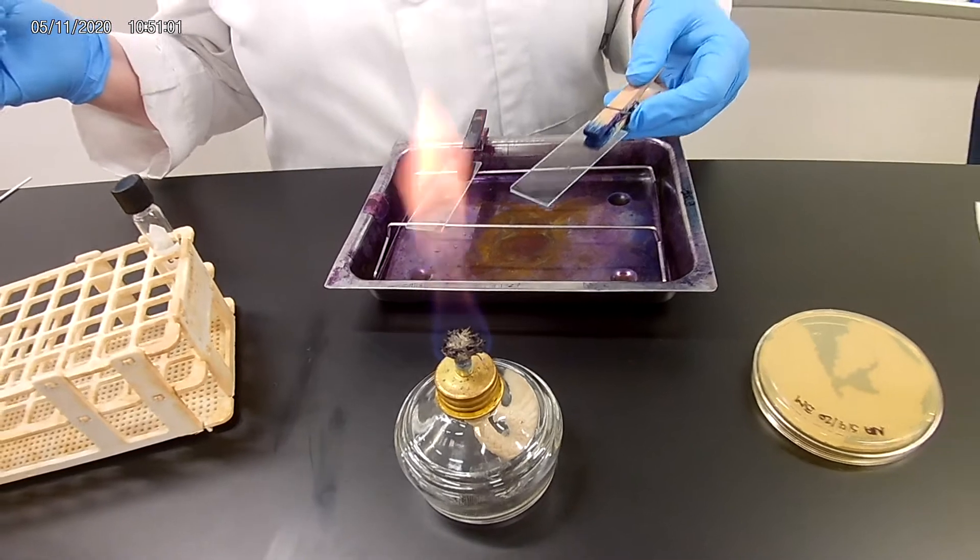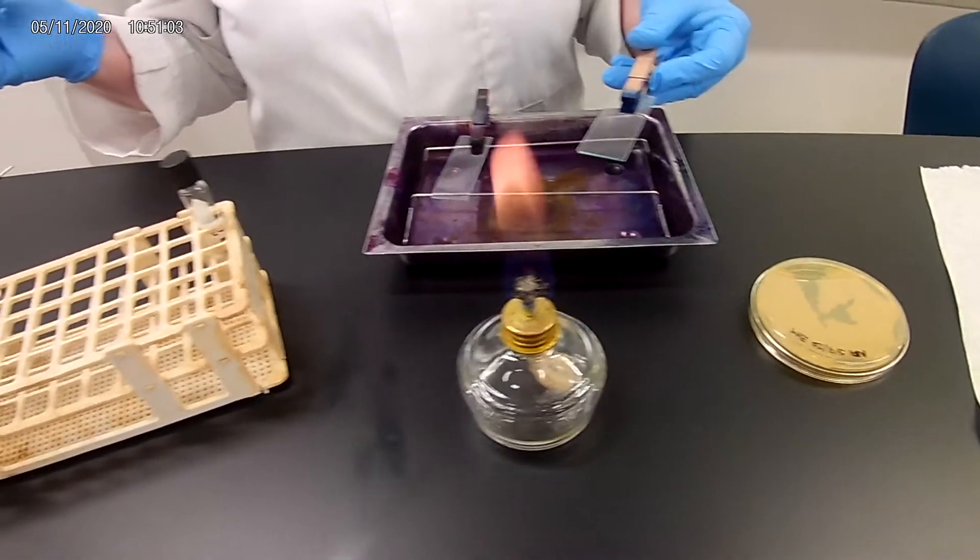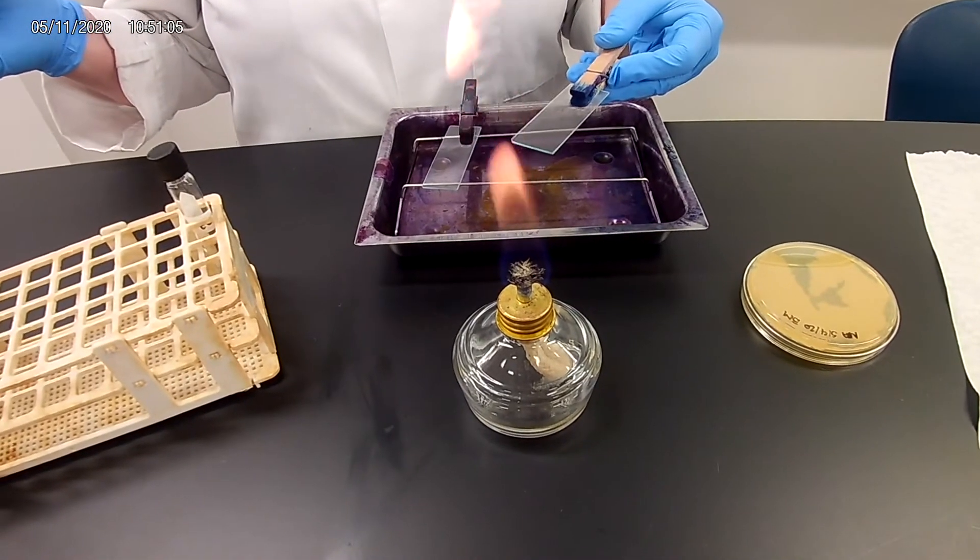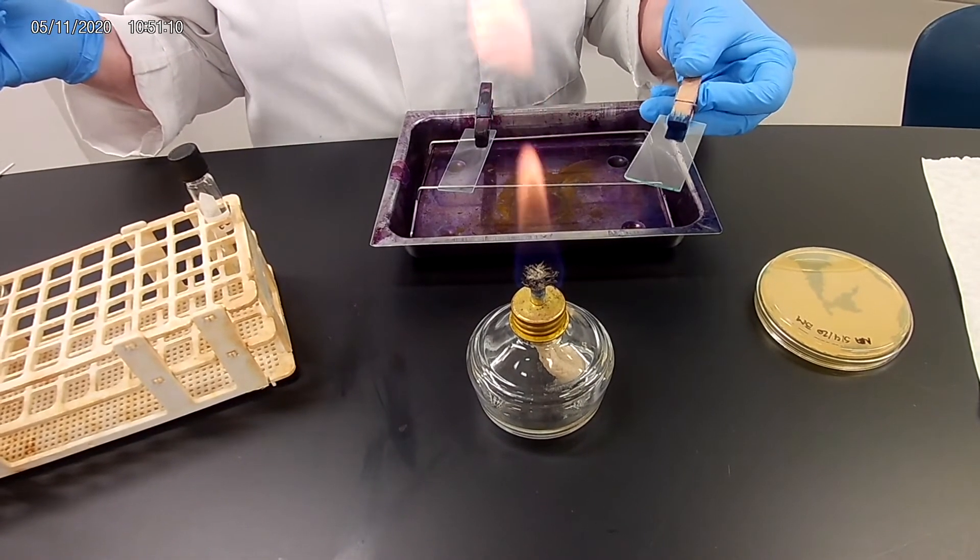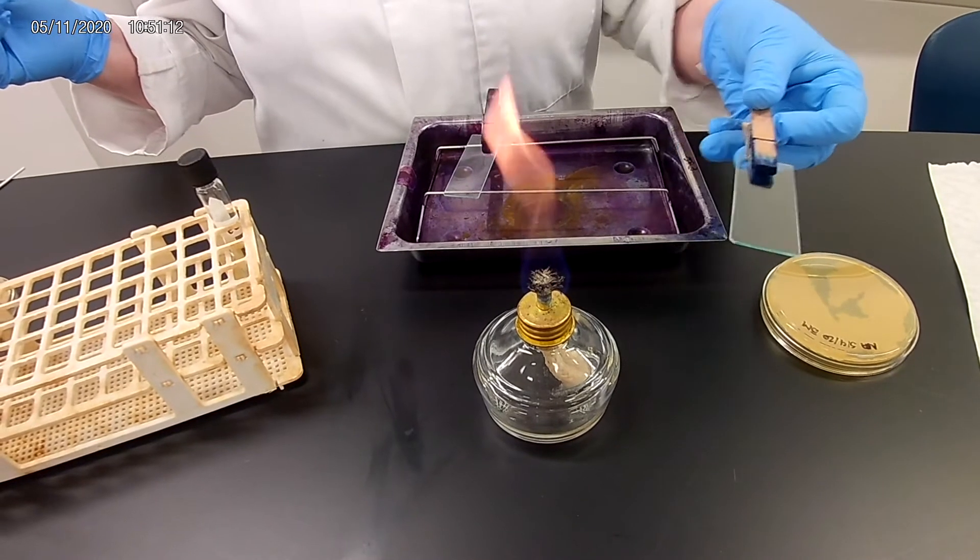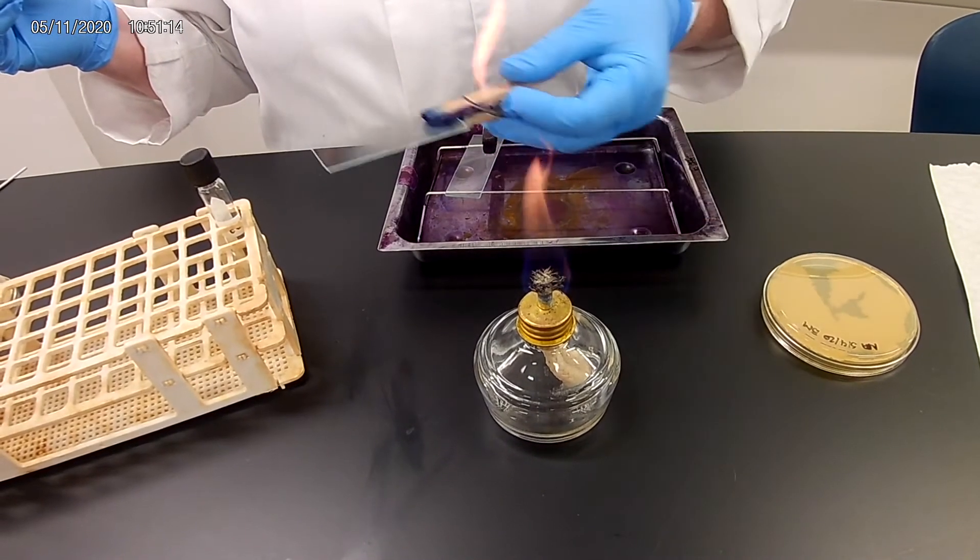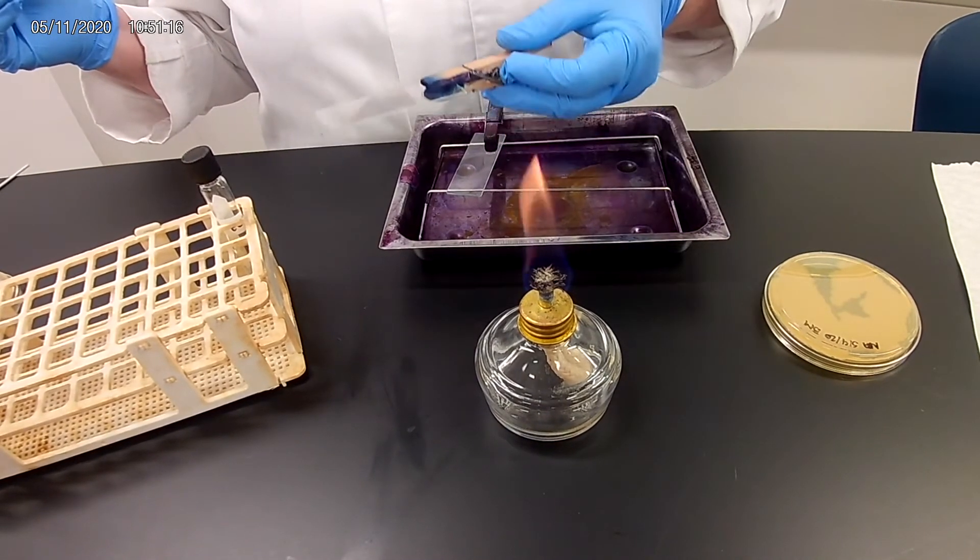To heat fix it, we're just going to pass the slide through the flame. That's the helpful thing of putting a clothespin on the slide instead of hanging on to the end of your fingers. It gives you a little more distance between that flame and your fingers. I usually just kind of go one, two, three, pass it through.